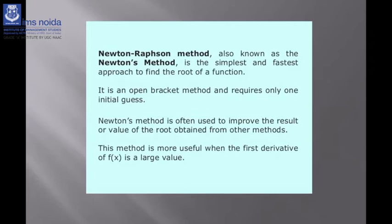For the Regular Falsi method, the same conditions are applied. You have to assume two roots A and B where FA × FB < 0. Then the new root equals (A·F(B) − B·F(A)) / (F(B) − F(A)).